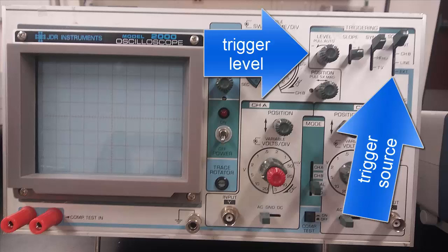Then, adjust the trigger level knob until you get a clear signal. If you still don't have a clear signal, call your instructor over.